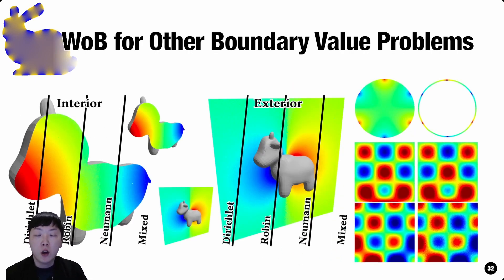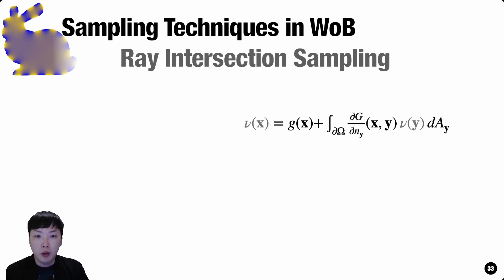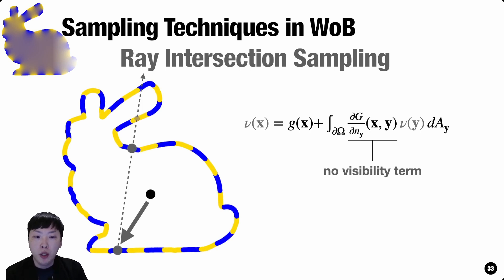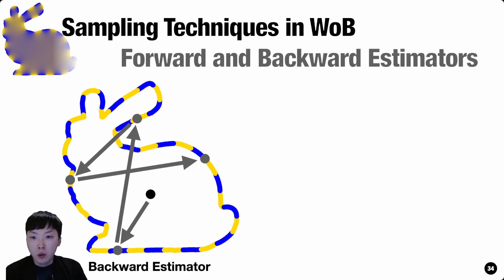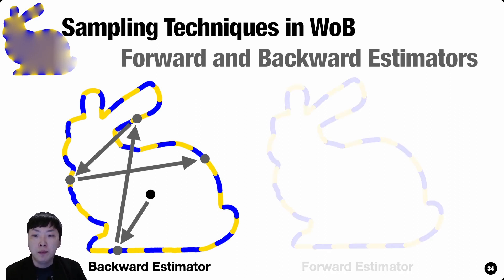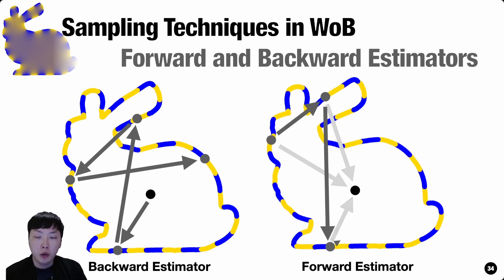Walk-On Boundary has much freedom in how we solve problems, due to its striking similarity to MC rendering. The most straightforward approach is ray intersection sampling. Unlike the rendering equation, our integral kernel does not contain a visibility term, so when a ray has multiple intersections, we sample one with uniform probability and proceed. This handling of multiple intersections incurs additional variance, but the variance is still bounded. We call this the backward estimator in analogy to rendering, but we can also sample paths in the opposite direction, giving us the forward estimator, which is more efficient in some cases and is used for Neumann problems.